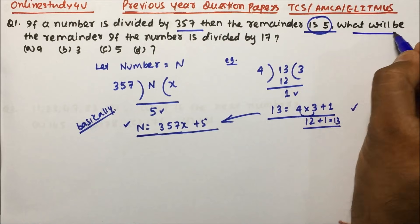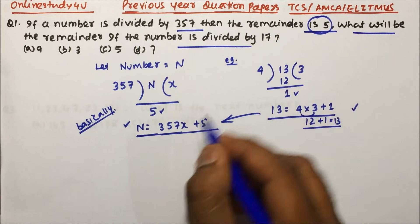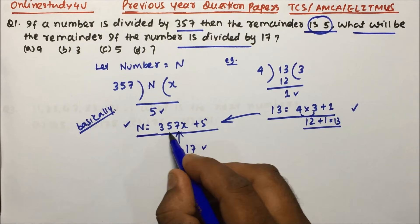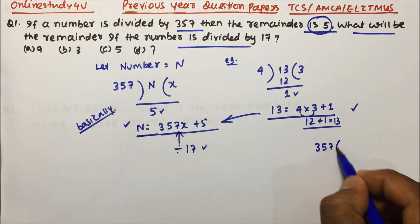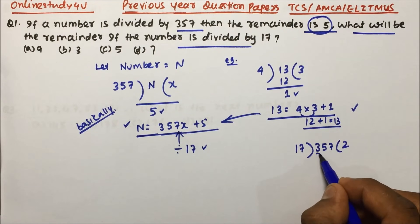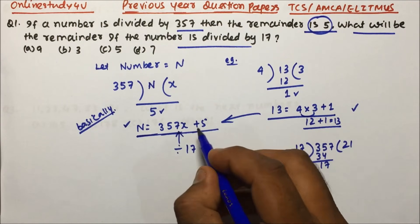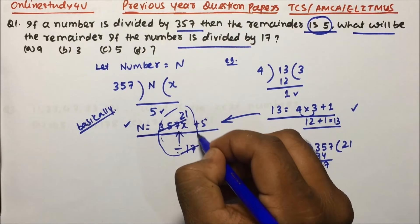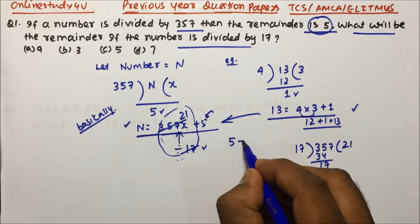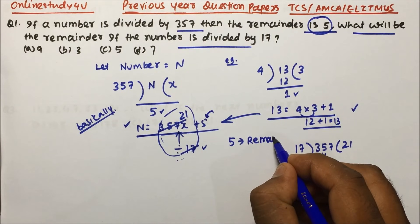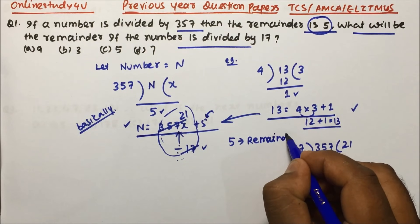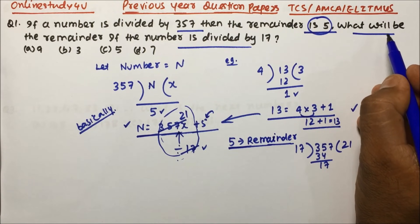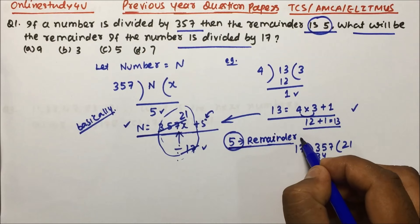What has been asked: what will be the remainder if the number is divided by 17? Now 357 divided by 17 goes 21 times — meaning 357 is completely divisible by 21. So what remains? 5 will be remaining, and that becomes your remainder. So 5 will be the remainder when divided by 17.